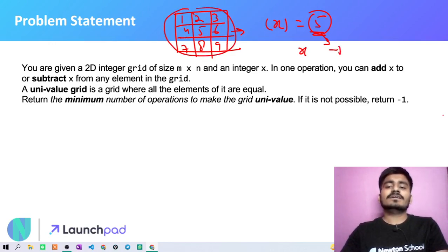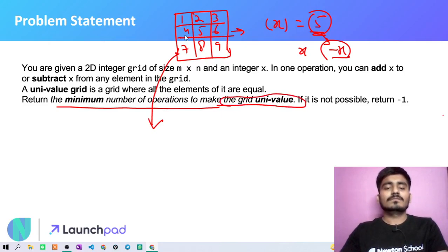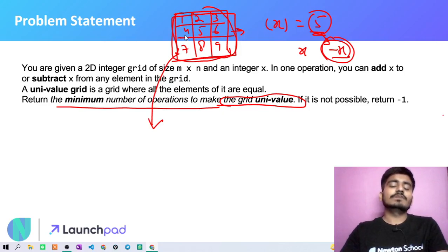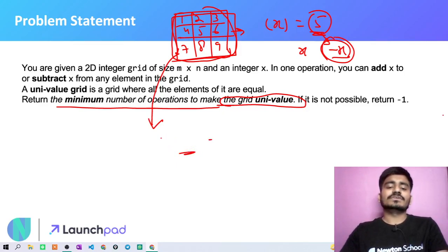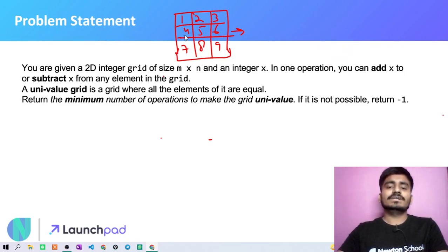In one operation, you can add x to any of these numbers or subtract x from any of these numbers. When you add or subtract x, the values of those numbers change. You have to do the minimum number of operations to make the grid univalue — meaning all values equal. If you can't do that, print minus one. So we have two things given: a 2D grid and integer x.